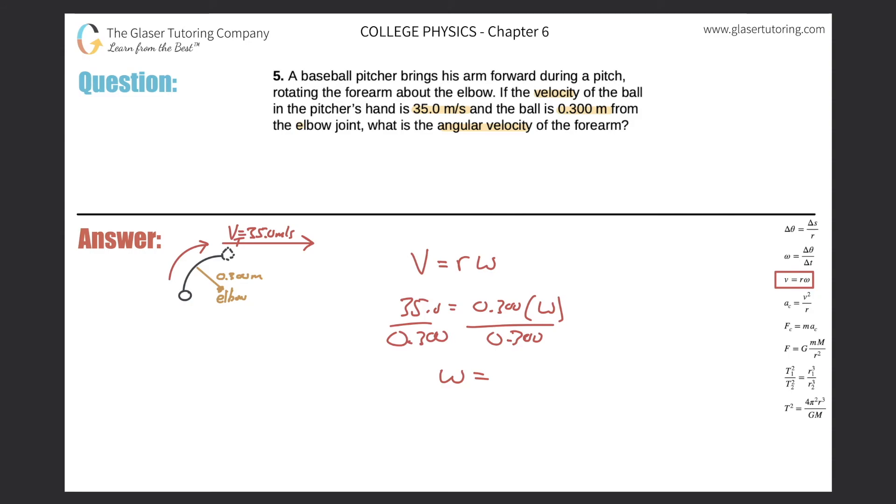It becomes 117, considering rounding and sig figs. So 117. Now remember the units here - the units for angular velocity will always be in radians per second. Those are the standard units of angular velocity.